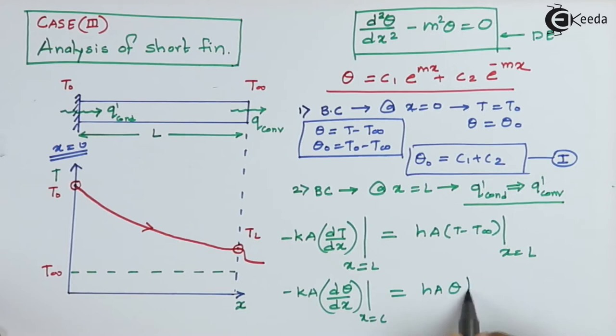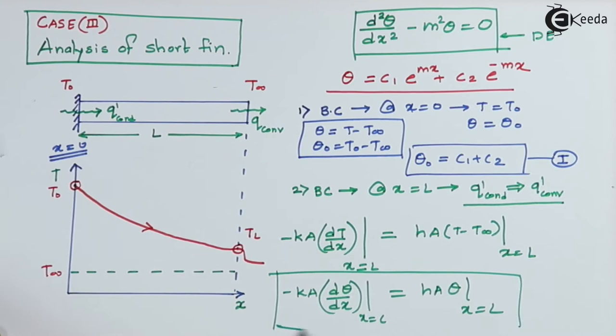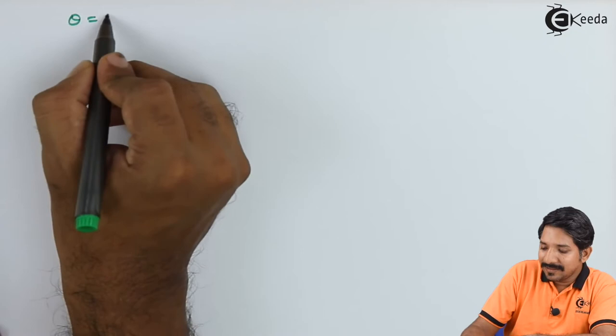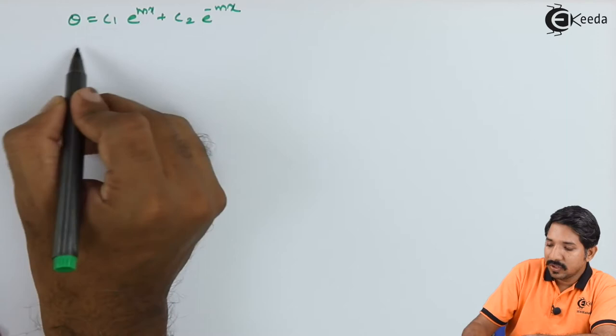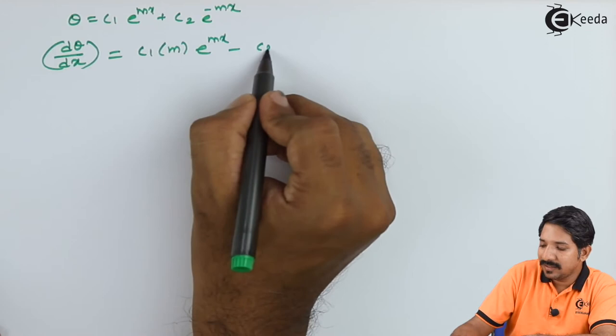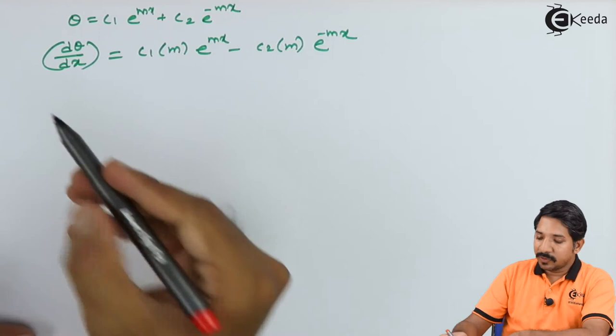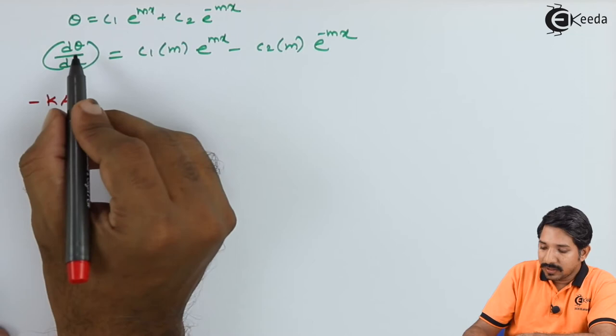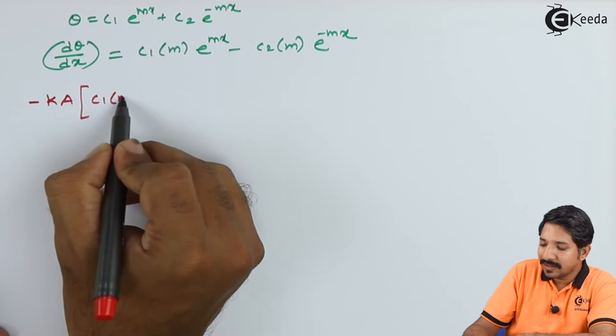Now let us substitute the values of theta and its derivative in this equation. We know theta equals C1 e raised to mx plus C2 e raised to minus mx. So d(theta) by dx equals C1 m e raised to mx minus C2 m e raised to minus mx. Substituting d(theta) by dx at x equal to L gives: minus K A times (C1 m e raised to mL minus C2 m e raised to minus mL).